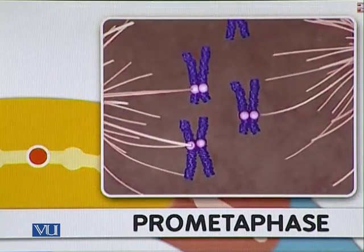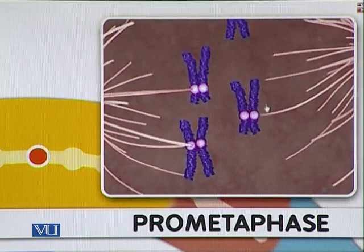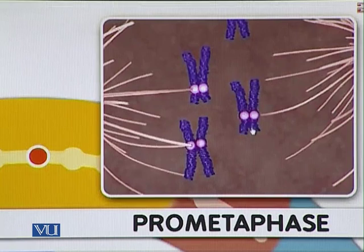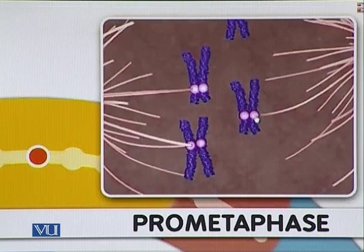During prometaphase, the nuclear membrane goes away. At this stage, each chromosome is composed of two sister chromatids, held together at the centromere region. The centromere is a special DNA sequence where specific proteins assemble, and these proteins form kinetochores.